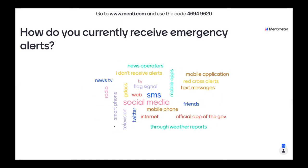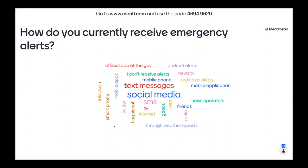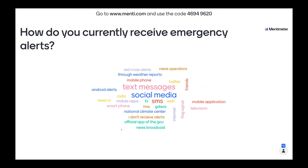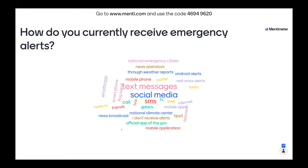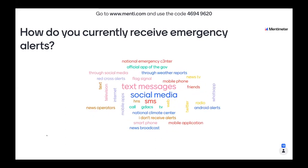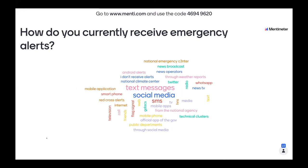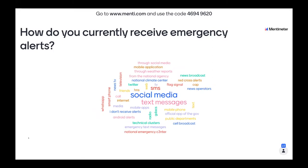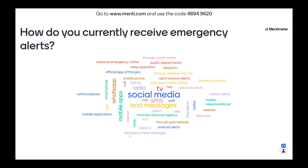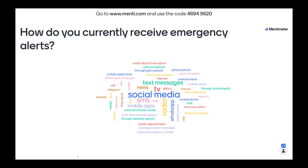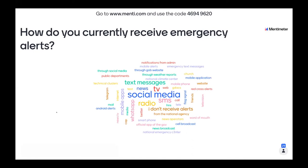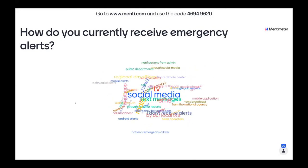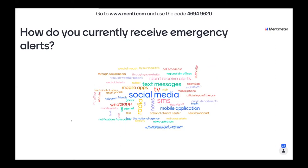Some really interesting responses so far, some that we expect of course. Social media is a big one. Text messages are a big one. I see a couple of different examples of mobile phone applications. Things like TV, news radio. Excel broadcast. Android alerts. Some specific call-outs for things like WhatsApp and Twitter. And interestingly enough, one that we'll hopefully be able to help with today is the response of 'I don't receive alerts.' So that's something we'll definitely have a chance to talk about today.